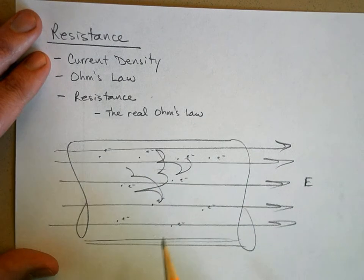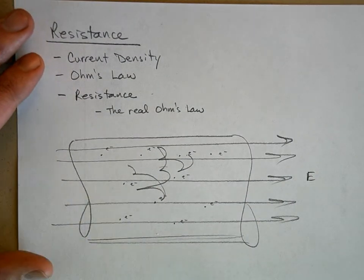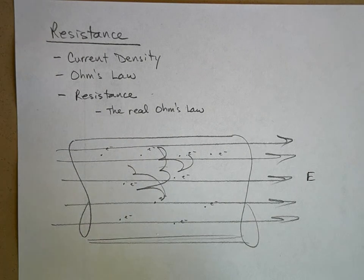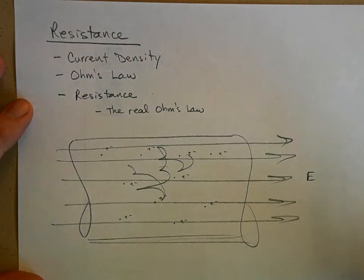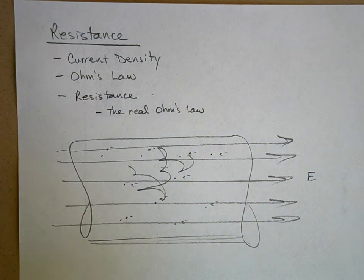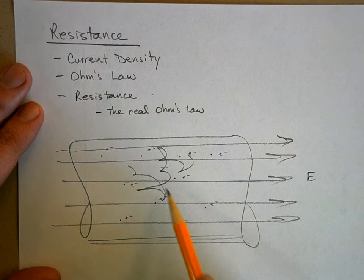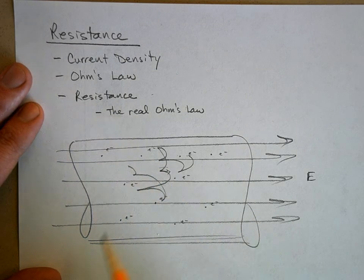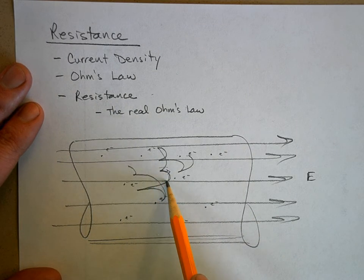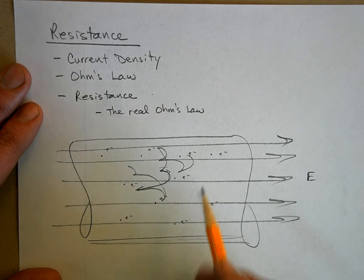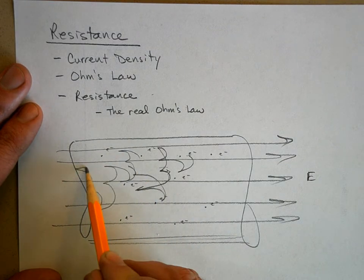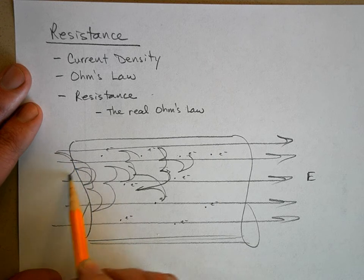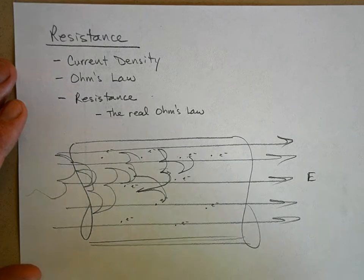What the electron does is run into stuff — it runs into other atoms, it runs into other electrons. It's like a little pinball in a pinball machine — a gigantic pinball machine that just slopes down forever. It sometimes moves in the wrong direction, but there's a force on it that inevitably pulls it back. So it drifts.